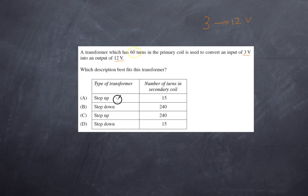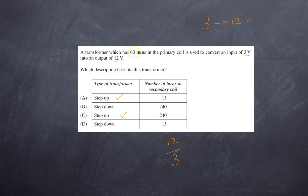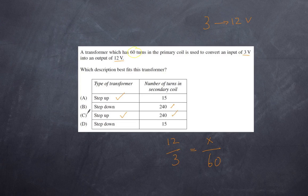That automatically narrows it down to two responses. The ratio of primary voltage to secondary voltage is the same as the ratio of primary turns to secondary turns. We have 60 turns in the primary. For a step-up transformer the number of turns in the secondary coil increases, so only values larger than 60 are valid — the answer is C.